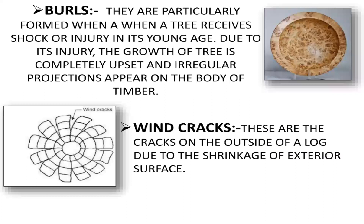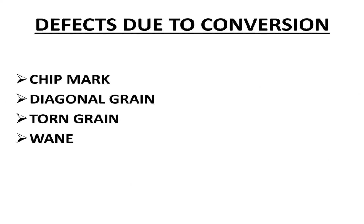Burls are particularly formed when a tree receives a shock or injury in its young age. Because of that injury, the tree's growth is completely upset and projections appear irregularly on the body of the timber. Wind cracks are cracks on the outside of the log which are due to the shrinkage of the exterior surface.